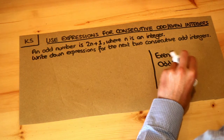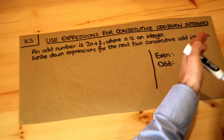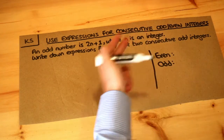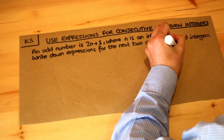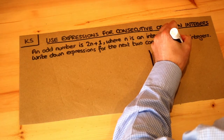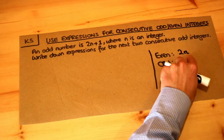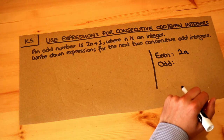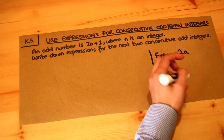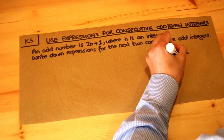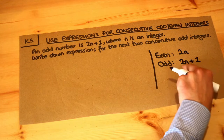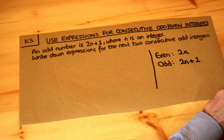Remember that an even number is always two times a whole number. A multiple of two is going to be an even number — two times something. So if we write something as 2n, that would represent some even number. And similarly, an odd number is one more than an even number, so if we took an even number and added one to it, this represents any possible odd number.